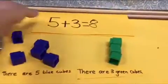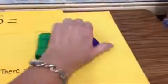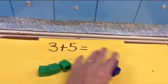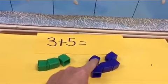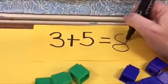Now let's see what happens if I change the order of my addends back to three plus five. One, two, three, four, five, six, seven, eight. My sum is still eight.